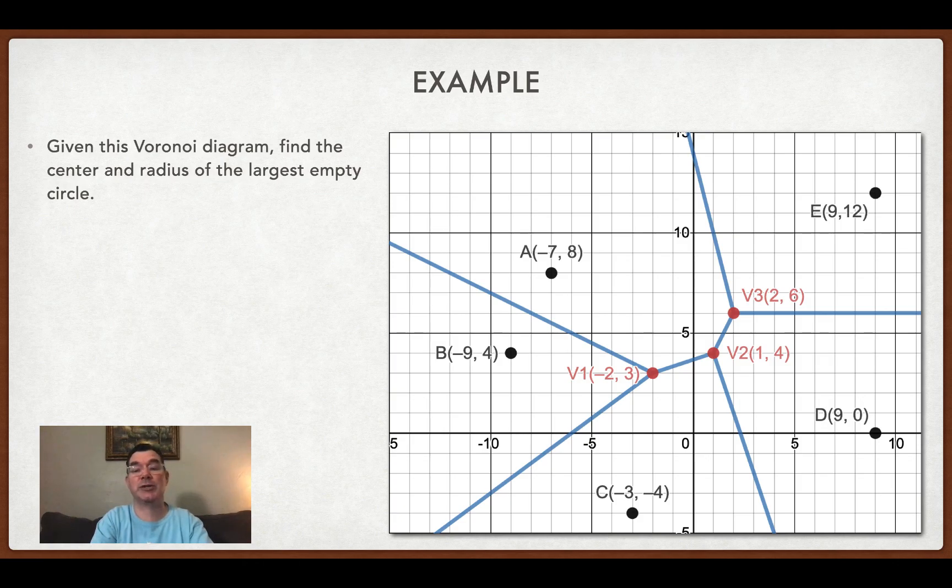And you want to know whether vertex 1, vertex 2, or vertex 3 would be the best choice because it would have to be furthest away from the nearest town.